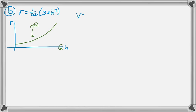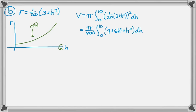So to find the volume, it's pi, the integral from 0 to 10, and then it's going to be r of h squared. So 1 over 20, 3 plus h squared, quantity squared, and then dh. And now this is just a nightmare. So it's pi over 400, the integral from 0 to 10, it's going to be 9 plus 6h squared plus h to the 4th dh.